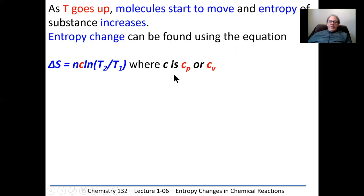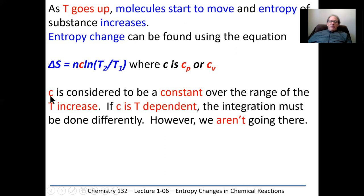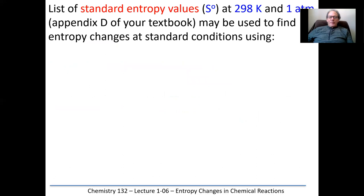The specific heat capacity C is considered a constant over the range of temperature increases. If C is temperature dependent, the integration has to be done differently — we'll leave that to further courses. For this course, we're going to simply stick with situations where C is considered to be constant.